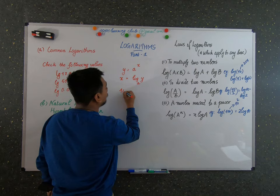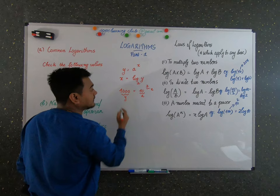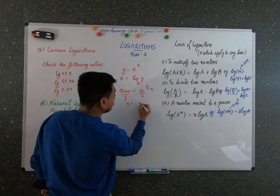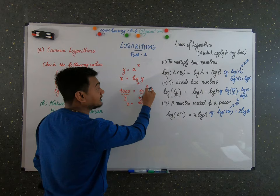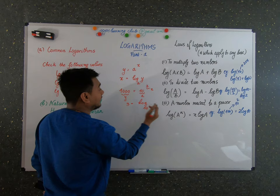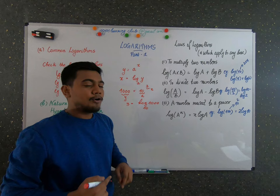For example, take the number 1000. 1000 is equal to 10 cubed. So y is 1000, a is 10, and x is 3. Using the formula, x equals the logarithm of y to base a. So 3 is equal to logarithm base 10 of 1000. This is how you find the value of the index from a logarithm.